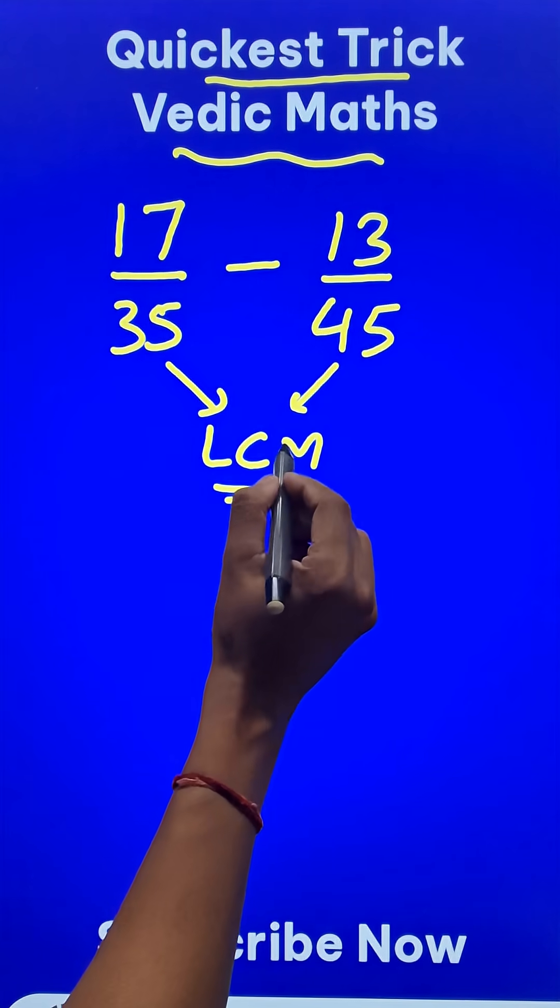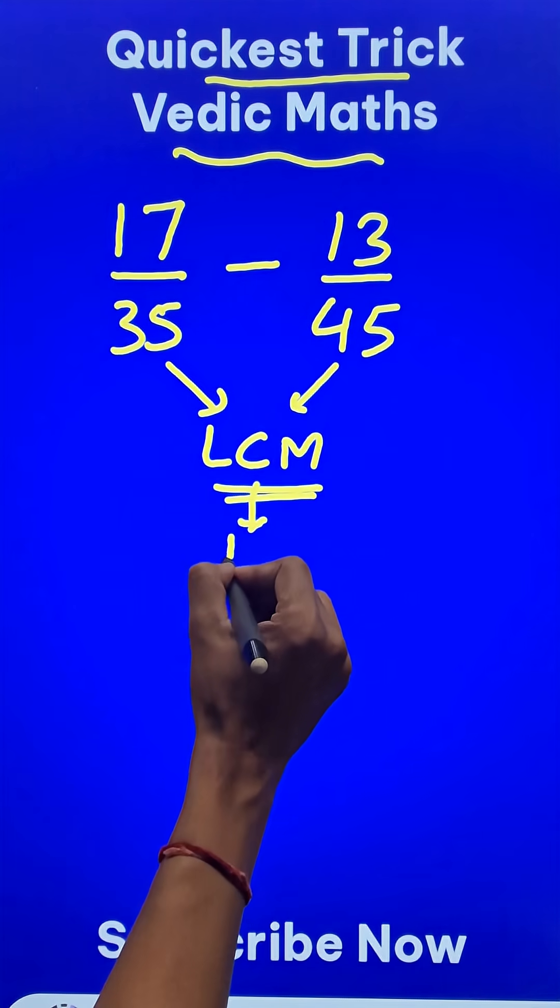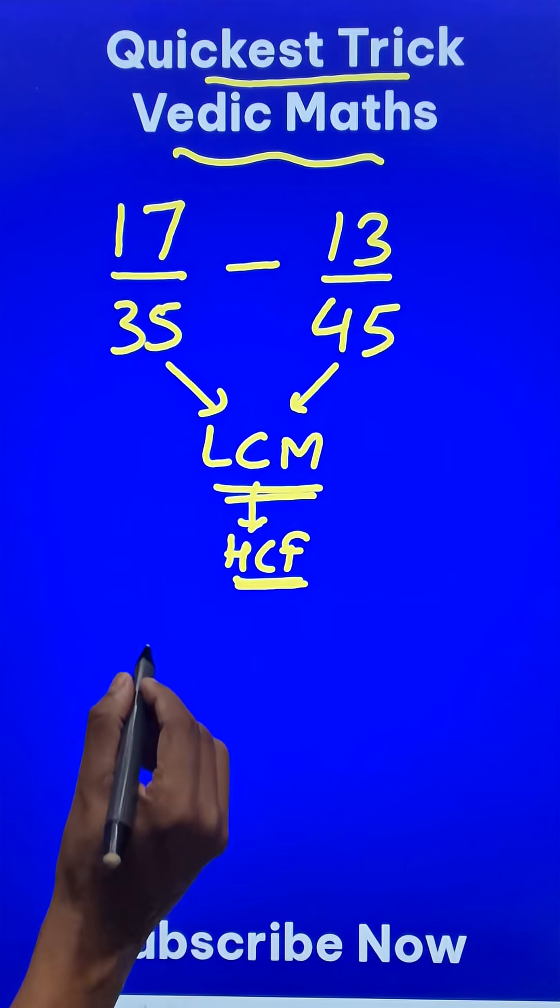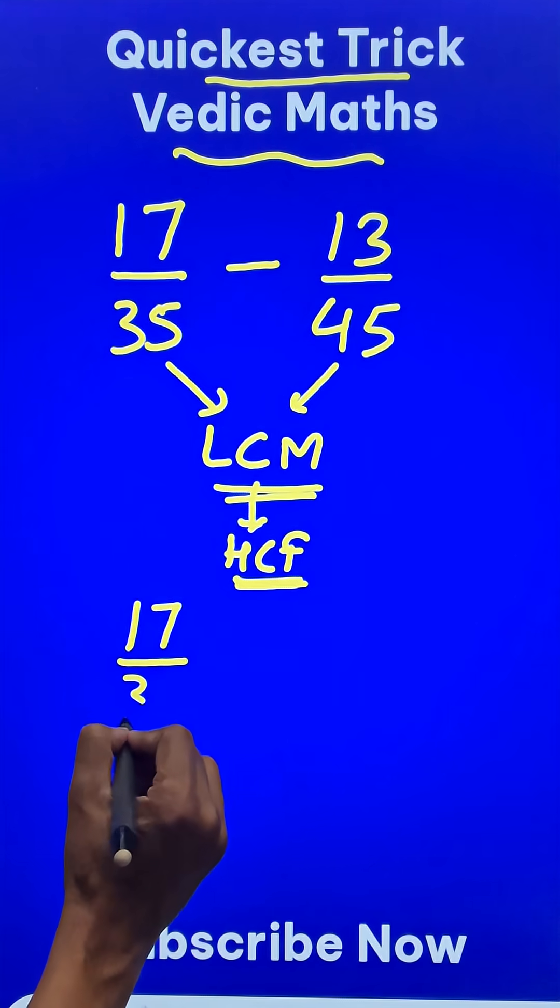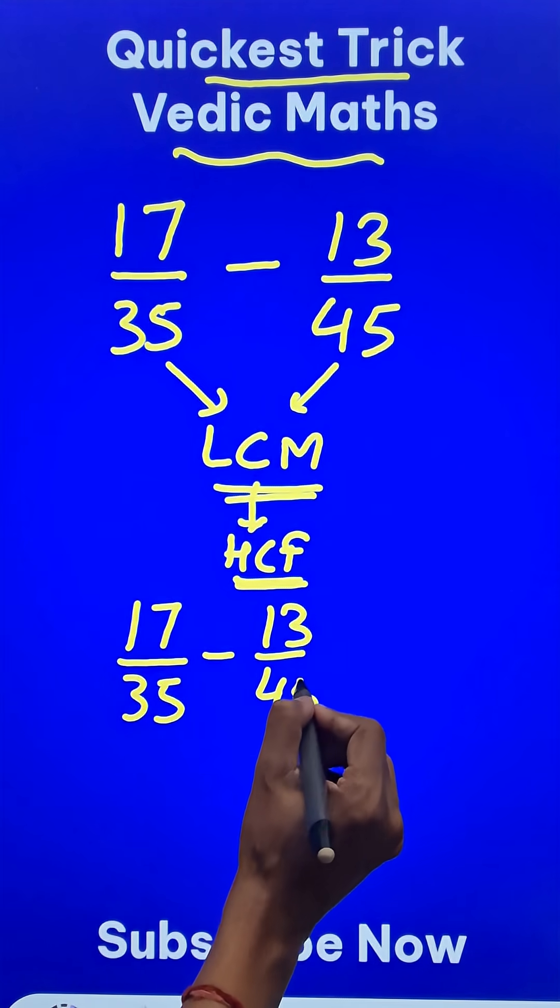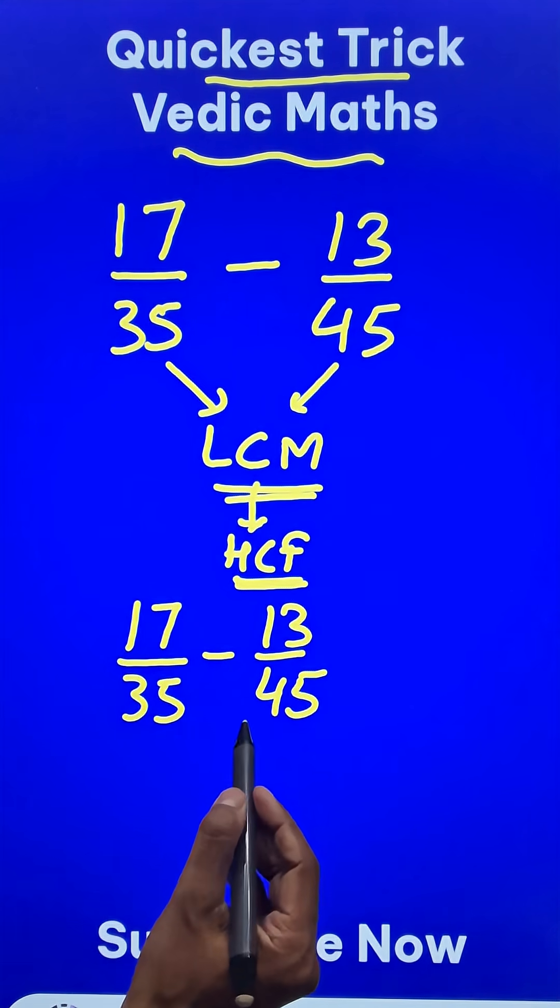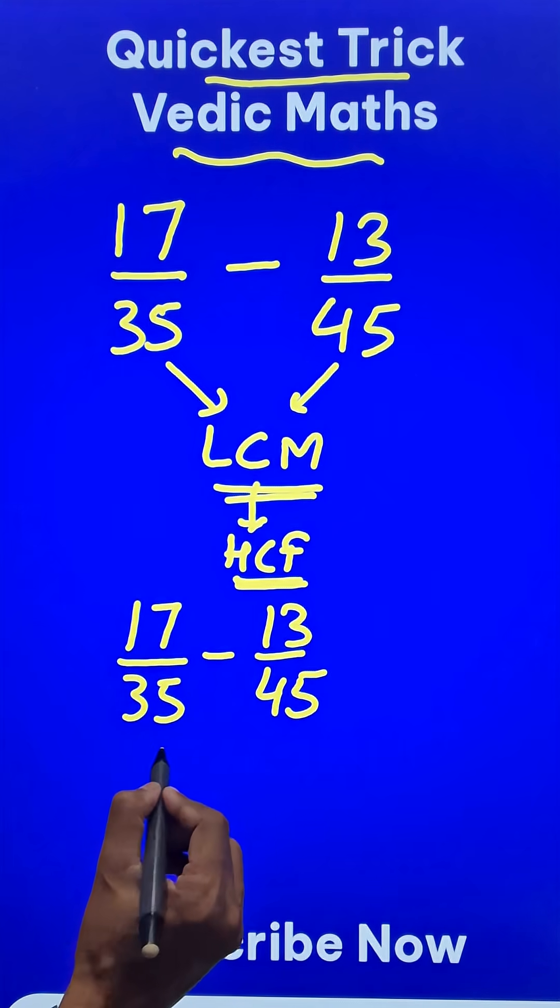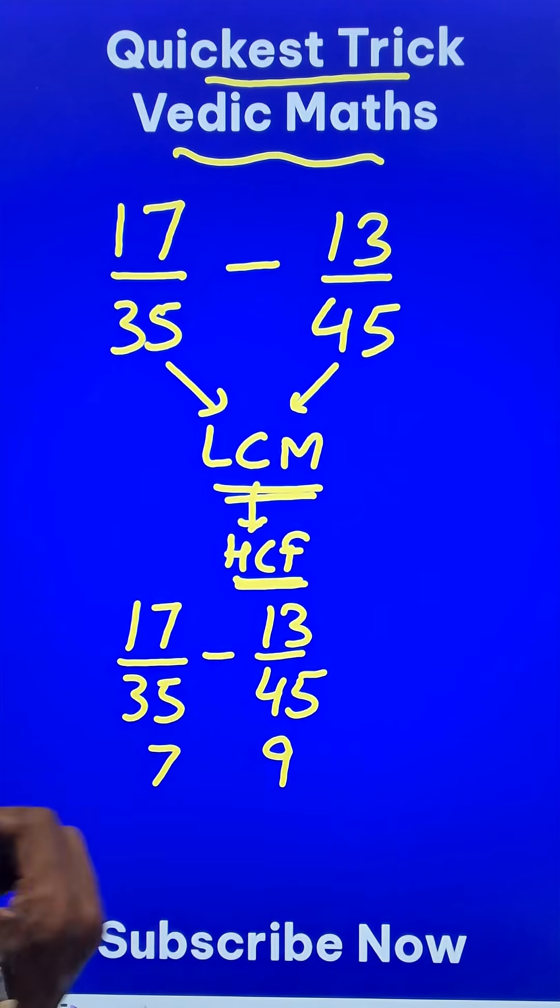So instead of taking the LCM we will convert this to HCF, that means the highest common factor. So for 17 over 35 minus 13 over 45, I know that the HCF of the denominators is 5. So 5 times 7 is 35 and 5 times 9 is 45.